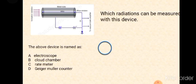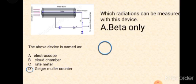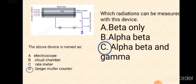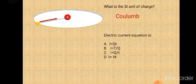The above device is named as what: electroscope, cloud chamber, rate meter, or Geiger-Müller counter? Yes, it is a Geiger-Müller counter or GM tube. Which radiations can be measured with this device? Alpha, beta, and gamma — all three can be detected by the GM tube.